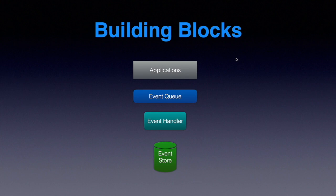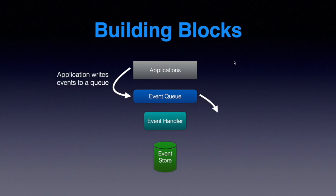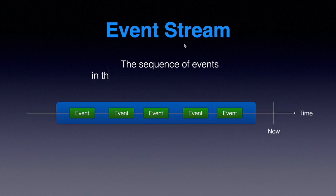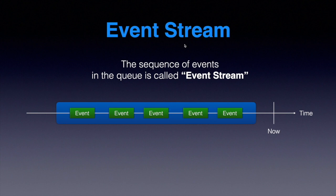In the event sourcing design pattern, we have the following building blocks: applications, event queue, event handler, and the event store. Applications write events to the event queue. An event handler receives these events, may validate them and validate the business logic, and once done, the events are stored in the event store. The sequence of events passed through the event queue to the event store is called an event stream — we have a constant stream of events from application to event storage.